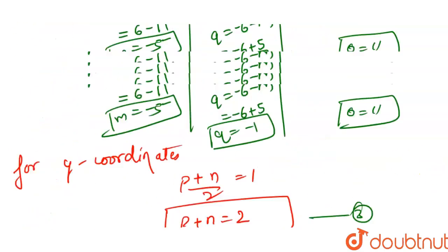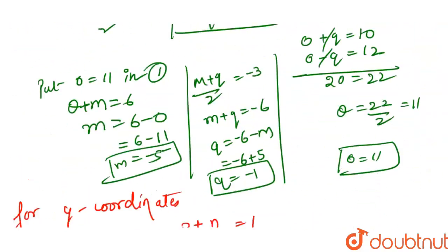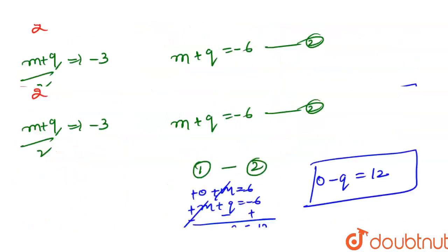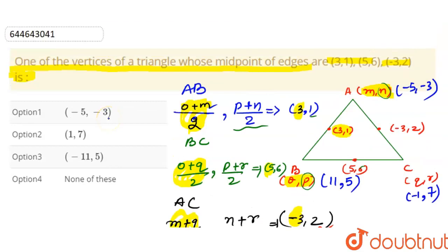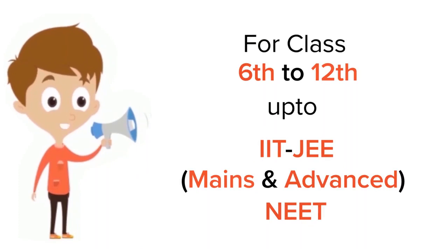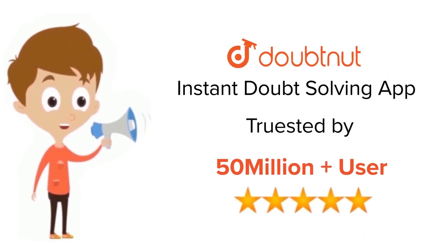Now we have all values: A is (m, n) = (-5, -3), B is (o, p) = (11, 5), and C is (q, r) = (-1, 7). Matching with the given options, only the first coordinate (-5, -3) matches, so option 1 is the only correct answer. For class 6 to 12, IIT JEE and NEET level — trusted by more than 5 crore students. Download Doubtnut today.